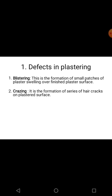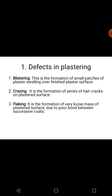The second type of plastering defect is grazing. Grazing means you will find a series of hair-thin cracks on the plaster surface. The cracks found on the surface are the size of a hair, so if you find a series of such hair cracks, that is grazing.